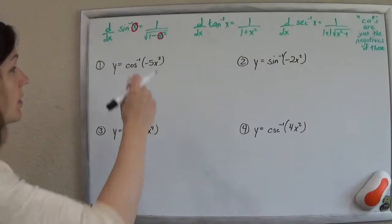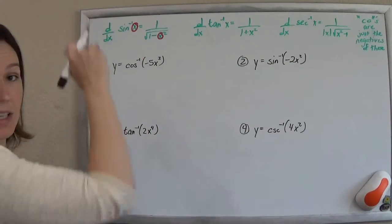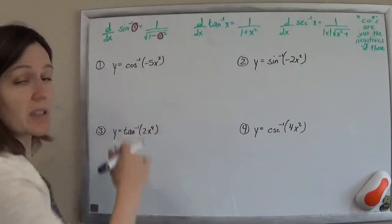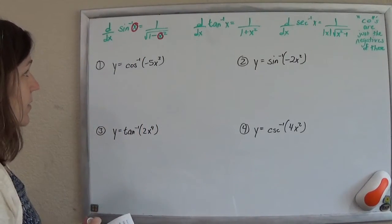If it's this inverse sine of something, it's that something squared, whatever that is, gets kind of plugged into there. And then, of course, times the derivative of whatever that was, whatever that inside function was.